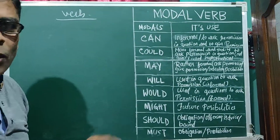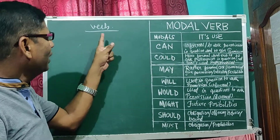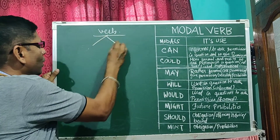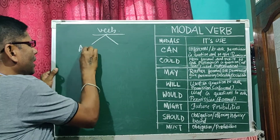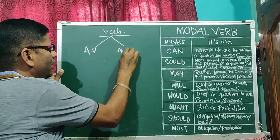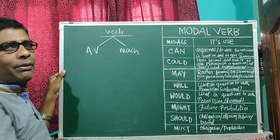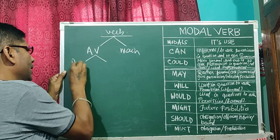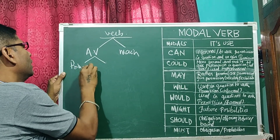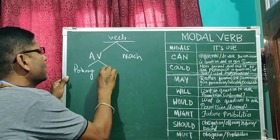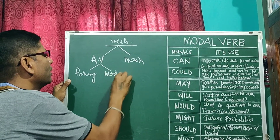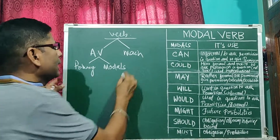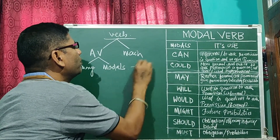While we discuss about the modal verb, we have to think about the verb. Verb has two kinds: one is auxiliary verb and the other is main verb. Auxiliary verb also has two kinds: one is primary auxiliary and number two is modals. In English, there are 13 number of modals.